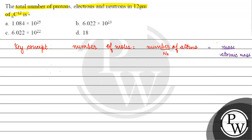So if we calculate the number of moles of ¹²C₆, what will happen? Mass of ¹²C₆ is 12 gram divided by atomic mass, which is 12 gram per mole. So we will have one mole.